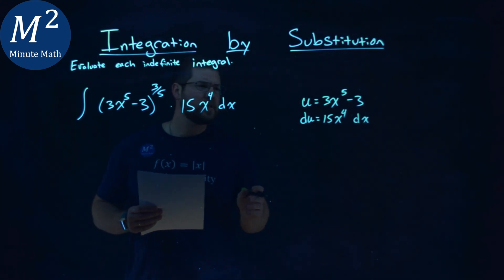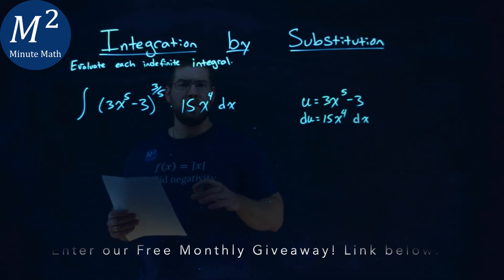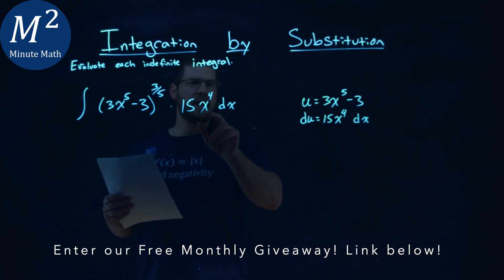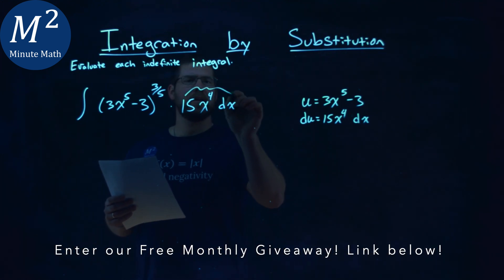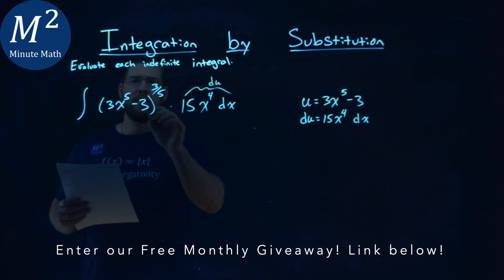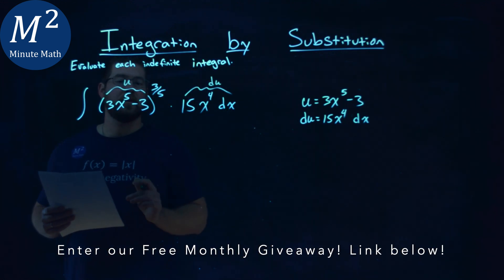And now, does this actually line up with our problem? Can we write this in terms of u? And we can. 15x to the 4th dx directly is my du, and my u fits right in here in the parenthesis.